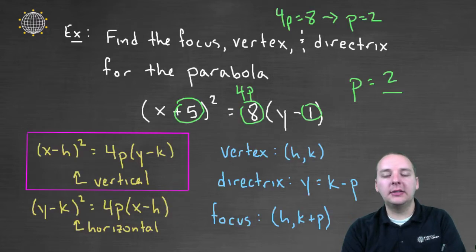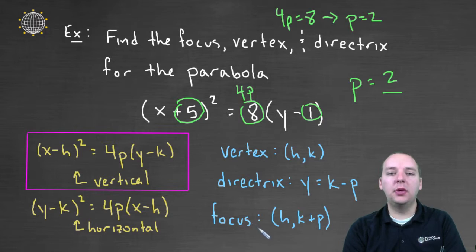And then, lastly, the focus. We're going to take our vertex point (h, k), (-5, 1), and add p to the y value instead of subtracting p. So it would be (-5, 3). That's 1 plus 2.